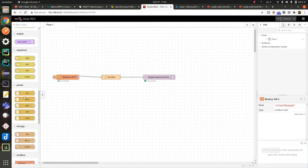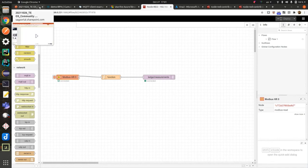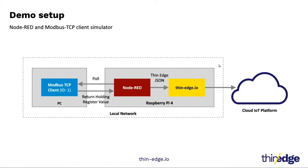What I want to achieve with Node-RED: I'm going to use the same Raspberry Pi 4 where Node-RED and thin-edge.io are running. On the same local network, I have another device where a Modbus TCP client simulator is running. Node-RED will poll the Modbus TCP client, which returns a holding register value. Node-RED then converts that raw data to the thin-edge.io JSON measurement format, and publishes it to the thin-edge.io local MQTT broker. Then thin-edge.io sends those measurements to cloud IoT platforms — Cumulocity IoT and Azure IoT Hub. The simulator is at address one and generates a random integer value from 0 to 10.